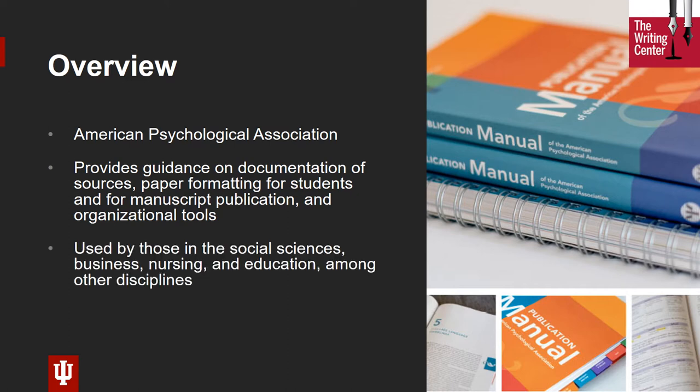Even though APA is the guide for the American Psychological Association, it's used in many fields beyond psychology. In fact, on a college campus, it is the most widely used citation style, and it's the preferred guide for those in the social sciences, business, nursing, and education. Its wide reach means that all students will likely be required to use APA at one time or another in their college career.